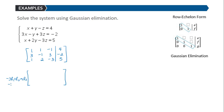We're also going to do negative 1 times row 1, add it to row 3, and replace row 3 with those entries. The first row stays as 1, 1, negative 1, 4. Multiplying row 1 by negative 3 gives negative 3, negative 3, positive 3, and negative 12. Adding those to row 2: negative 3 plus 3 is 0, negative 3 plus negative 1 is negative 4, 3 plus 3 is 6, and negative 12 plus negative 2 is negative 14.